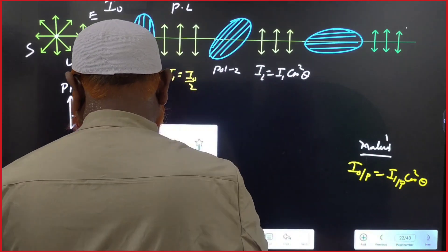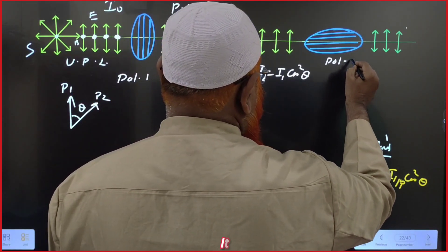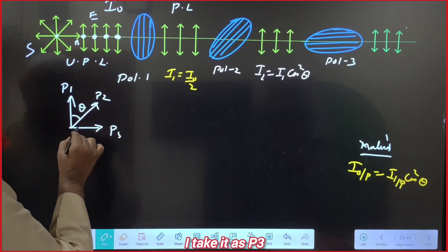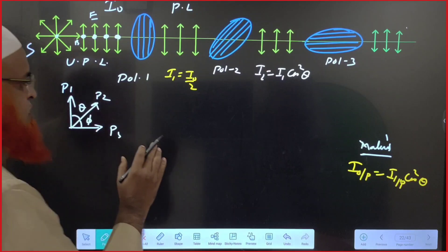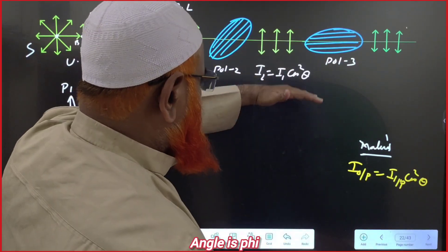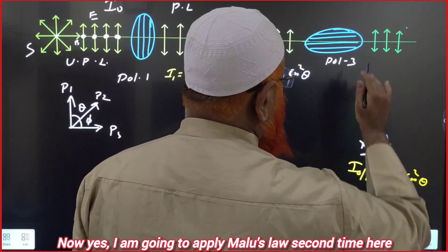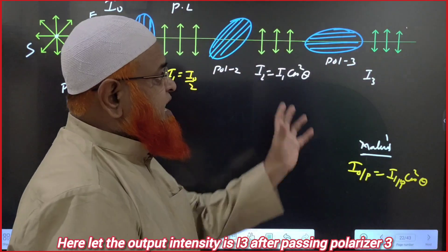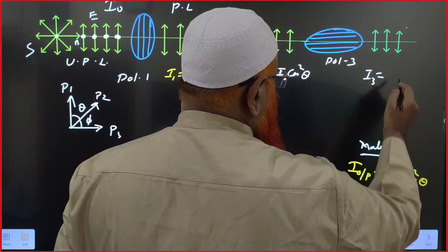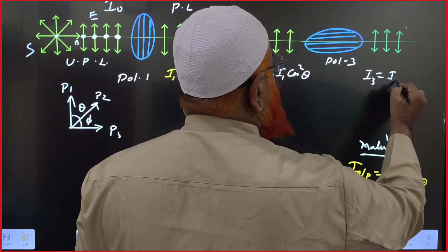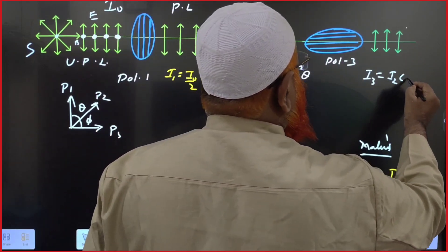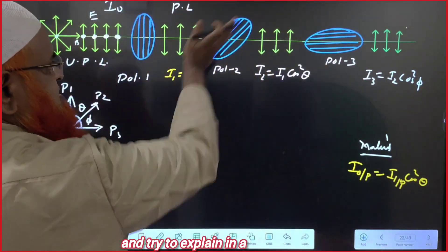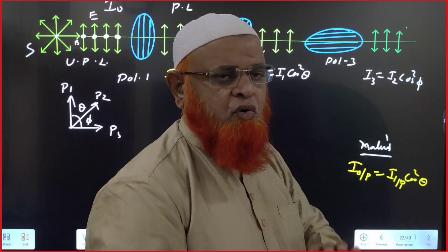Now there is a polarizer 3 (P3), which is horizontal. If I put polarizer 3 here, the angle between P2 and P3 is phi. Applying Malus's Law a second time: after passing through polarizer 3, the output intensity is I3 = I2·cos²φ, because the angle between polarizer 2 and polarizer 3 is phi, and the angle between polarizer 1 and polarizer 2 is theta.